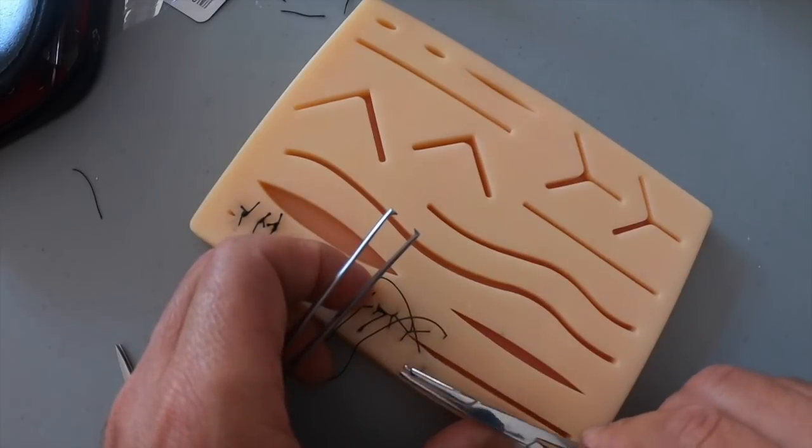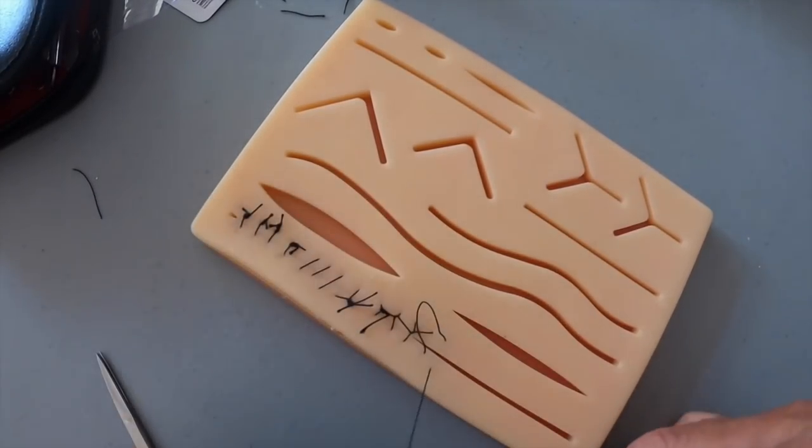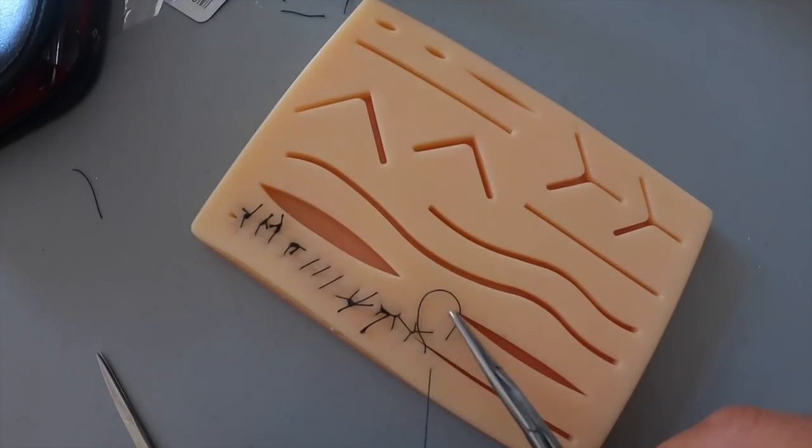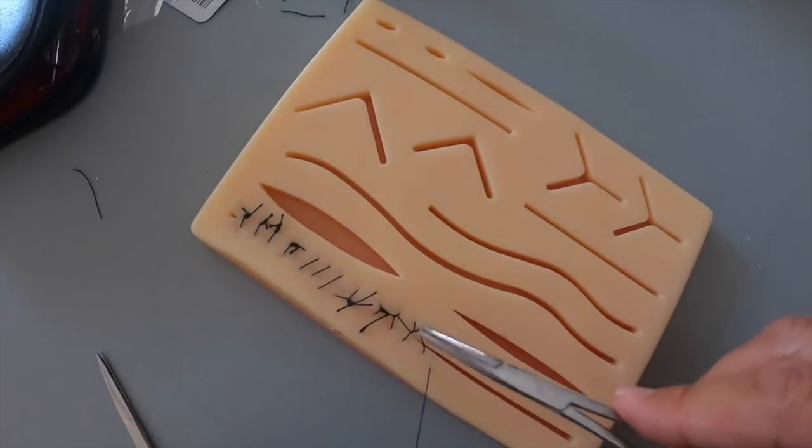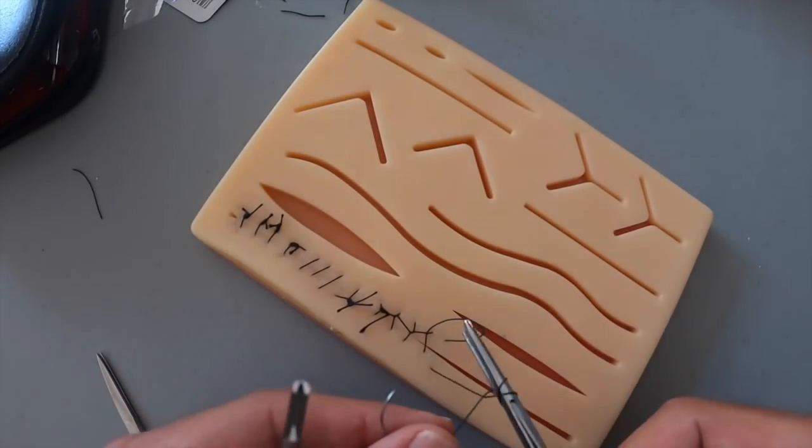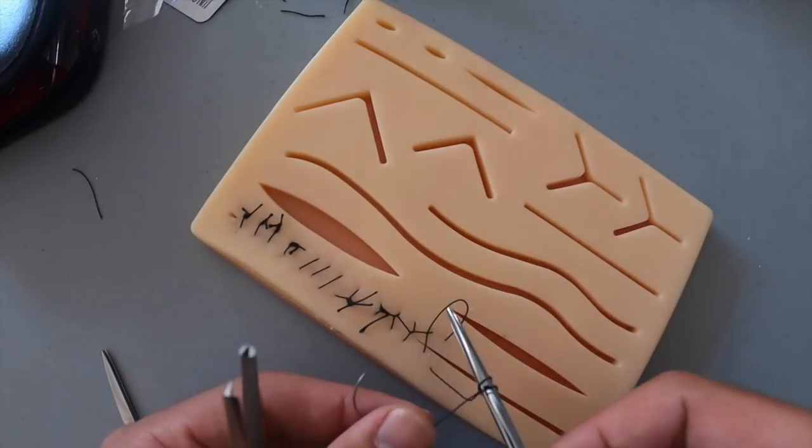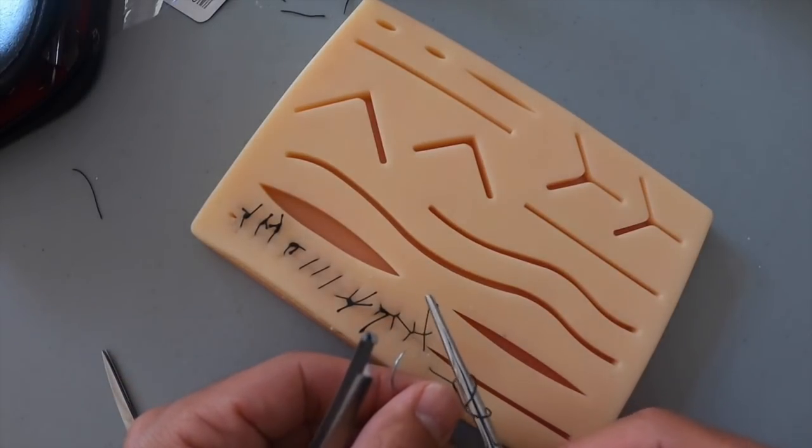All right, so this one just like with the continuous but not the interlocking, you leave that last loop and you're not going to come through. That's the one you're going to use to tie and make your last suture or stitch. So you go twice around and you grab your loop like that, pull it tight.